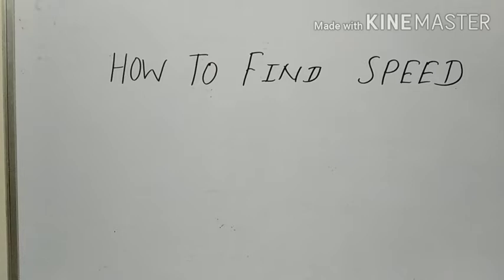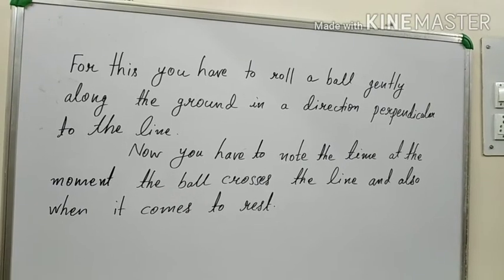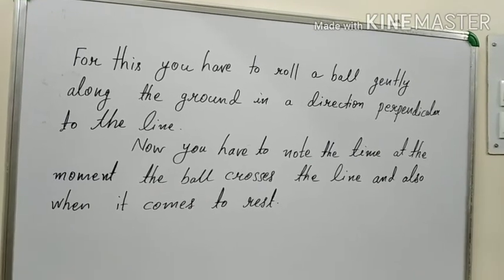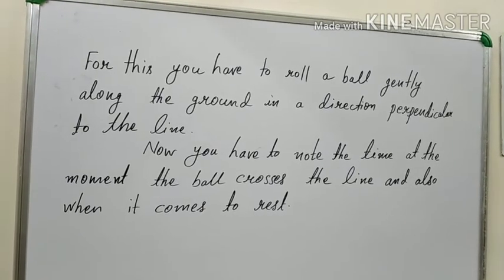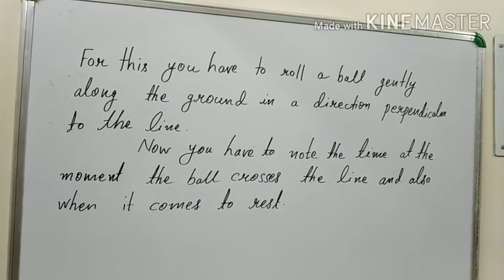Let us find the speed of a ball moving along the ground. So children, now get ready for Activity 13.3 given in your NCERT book. For this, you have to roll a ball gently along the ground in a direction perpendicular to the line.